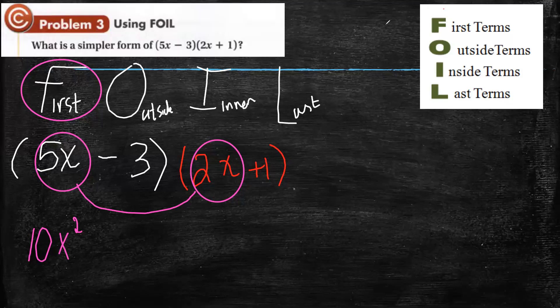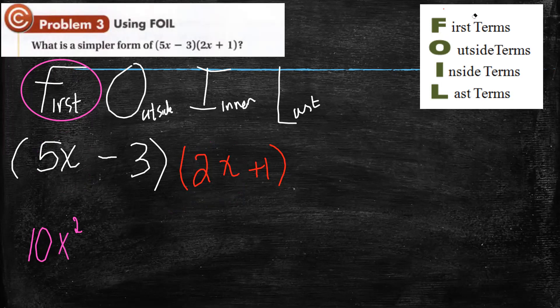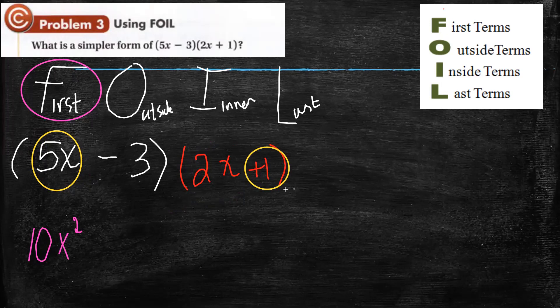Then outside — what does it mean? The outside means: look at these two binomials. The outside terms are on the right side and on the left side — they are the outermost terms. They are outside, not between them, not close to each other.